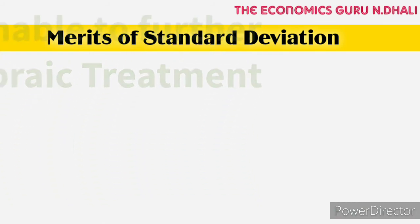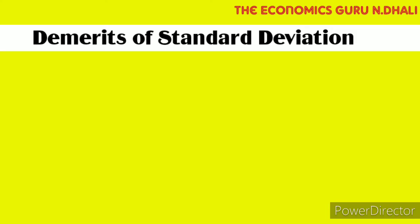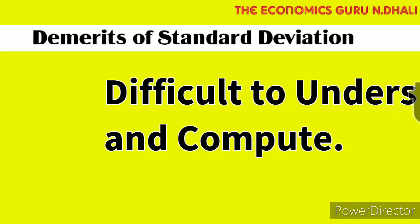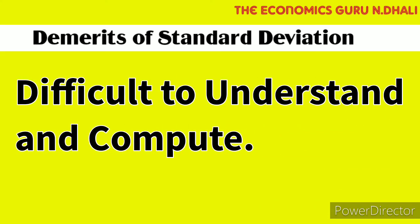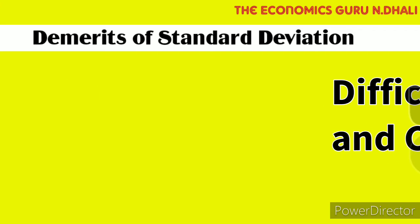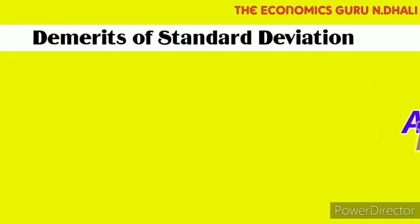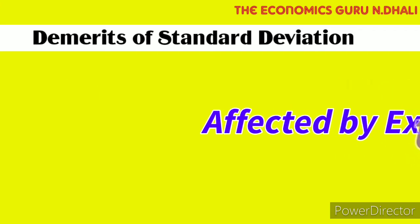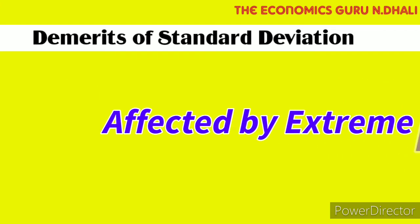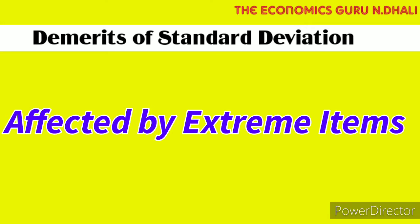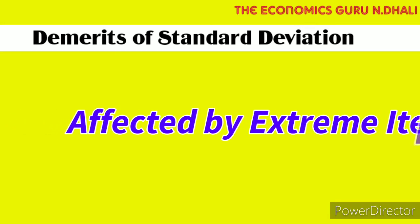Now the main demerits of standard deviation. The demerits: standard deviation is difficult to understand and compute — it is very difficult to understand and difficult to calculate. Next, it is affected by extreme items — the standard deviation is affected by the highest extreme items and it also affects the lowest items.